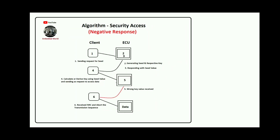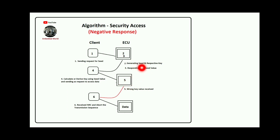Now for the negative response flow: starting again from the fourth step, the first three steps remain the same. While calculating or deriving the key, if there is a mistake, or an unauthorized person is trying to access the ECU data and sends the wrong key value, the ECU evaluates it, finds a mismatch, and sends back a negative response code — the NRC. After receiving the NRC, the sequence must be aborted and the tester has to start a new sequence. That is the algorithm flow for the negative response.